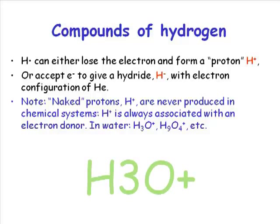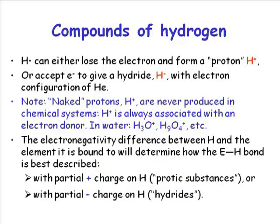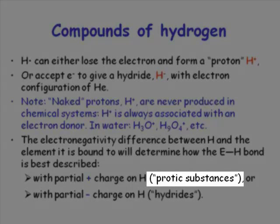Electronegativity difference between atoms allows us to predict the polarity of bonds in covalent molecules containing hydrogen. Molecules might be delta plus on the hydrogen or delta minus on the hydrogen. The only way we can tell is by comparing the electronegativity of hydrogen to the electronegativity of the atom to which it's bonded. If there's a partial positive charge on hydrogen, we call it a protic substance. If it's partially negatively charged, we call it a hydridic substance.